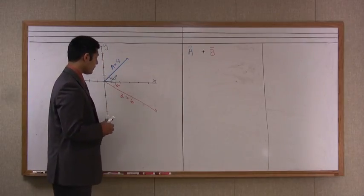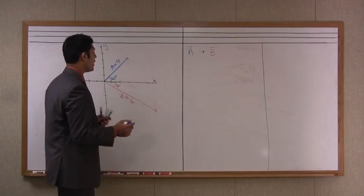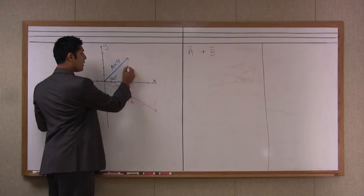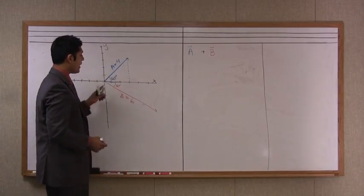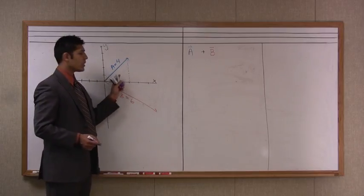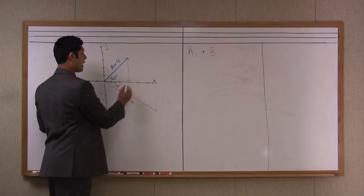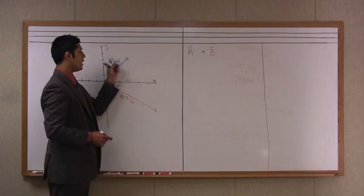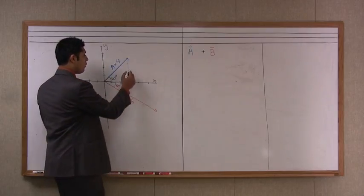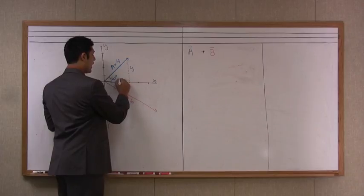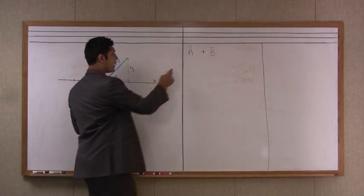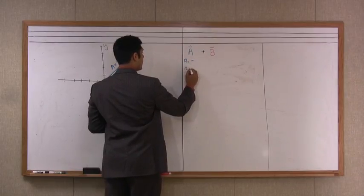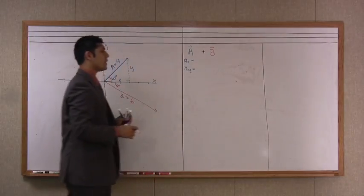So the first step I like to do is I like to drop a dotted line from vector a to the x-axis and that closes off our angles, our 60 degree angle and provides us with a right angle. And now what we can see here is that our hypotenuse is 4 and we need to find out what the y component is and what the x component is. And so let's write that into this panel here under the a and we'll write ax equals and ay equals. So now we need to get values for those.